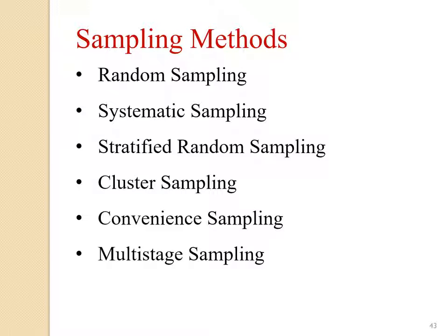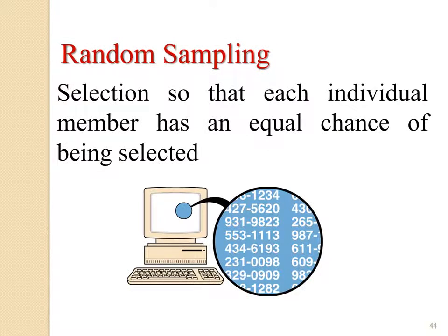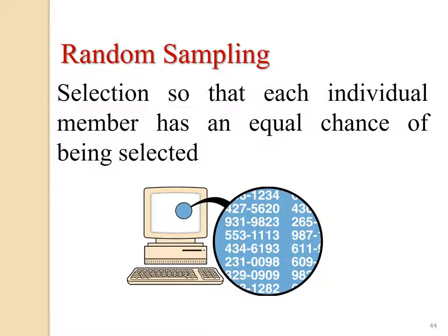Random sampling: each individual member has an equal chance of being selected. Nowadays statistical packages such as SAS have an option to generate random numbers. Initially, about 40 years ago, there were standard random number tables, but now everybody uses statistical packages such as SAS, or even Excel, to generate random numbers.